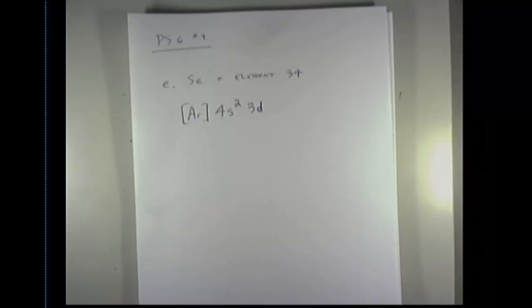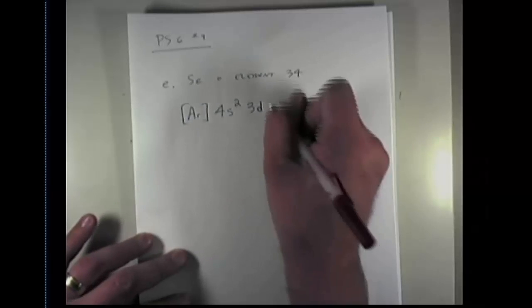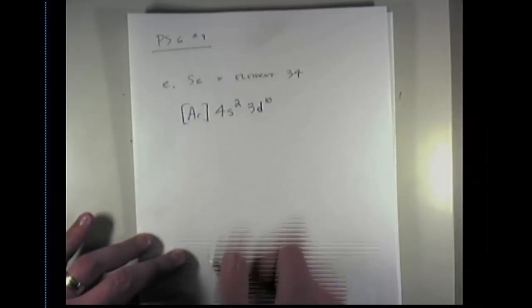And now I count up. Elements 21, 22, 23, 24, 25, 26, 27, 28, 29, and 30 will take me through the entire D block in that row with 10 electrons in it.